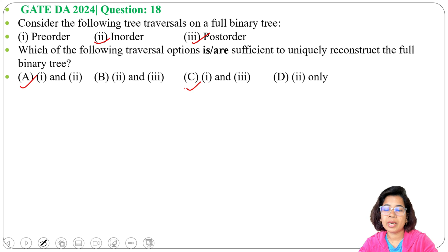Then option C: 1 and 3, pre-order and post-order—yes. If we know pre-order and post-order, we can also construct the unique binary tree.